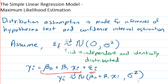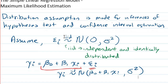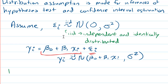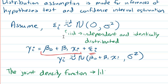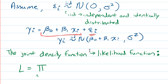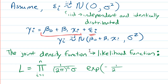Given that the error terms are iid normally distributed, we can write down the joint density function, which is the same thing as the likelihood function. That equals the product from i = 1 to n of the normal distribution: 1 over (2π)^(1/2) times σ, times exp of negative one-half times 1/σ² times (εᵢ minus the mean, which is 0) squared.